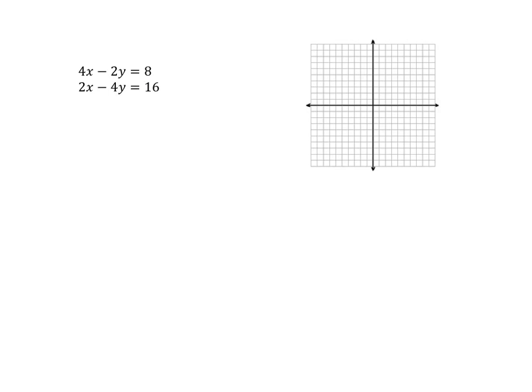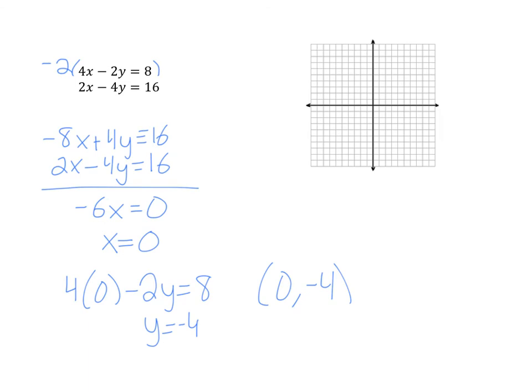Finally, let's look at a system that does have one solution. I could solve this system using any method, and I'm going to choose elimination. I chose to multiply my first equation by negative 2, so that my y's would cancel out. When I did this, I got x equals 0, I substituted that into the first equation, the original one, and I found that y equals negative 4.